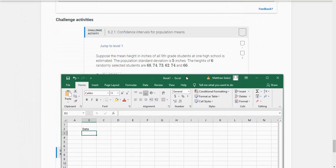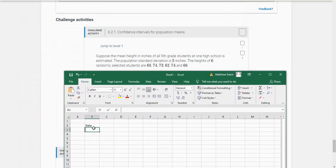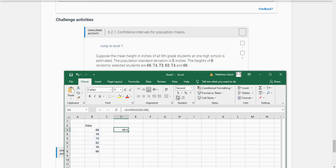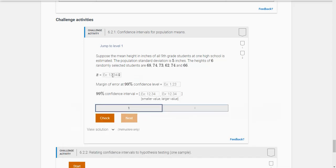First they give us the raw data and the values are 68, 74, 73, 62, another 74, and 66. So I've got one, two, three, four, five, six. The first thing it says is find the mean X bar. So that's equal average. I'm going to select the students and it looks like 69.5. So I'll put that in there.